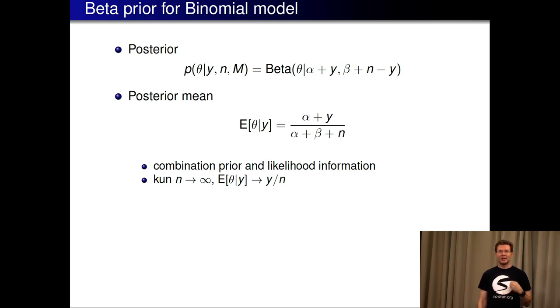So then with this conjugate prior for beta now the posterior mean is changed so equations are in the book so you can look more detail. I just now want to point out that this is now combination of prior and likelihood information but when we get the number of observations going to infinity then eventually this ratio goes to just y per n and that way we get the kind of the data swamps the prior.